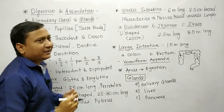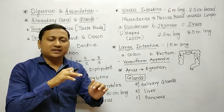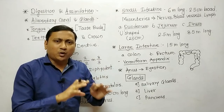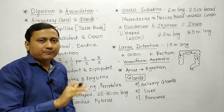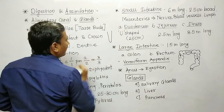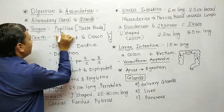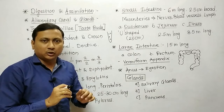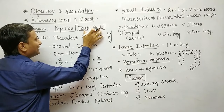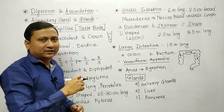The first part of the alimentary canal is the mouth. Now let's talk about the tongue. Tongue is a roughly triangular structure having numerous projections on its surface. In these projections, we have papillae. The papillae contain taste buds, which are required for the identification of the taste of food. The papillae are present on the upper surface of the tongue in the form of projections.